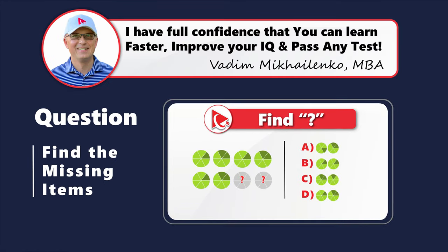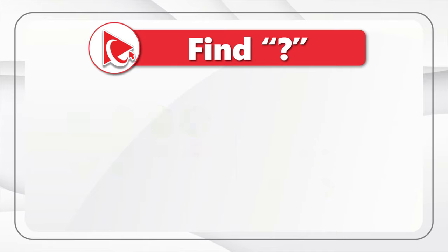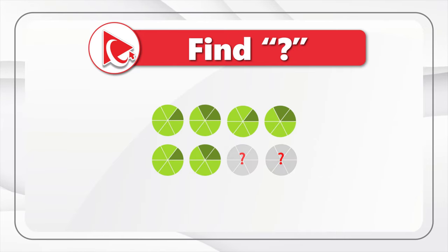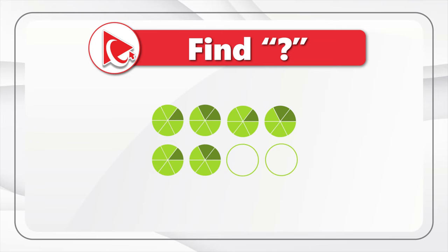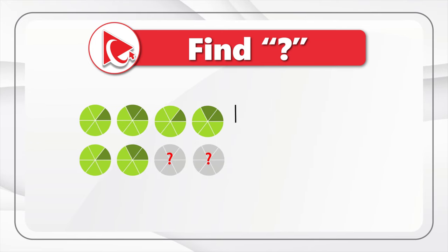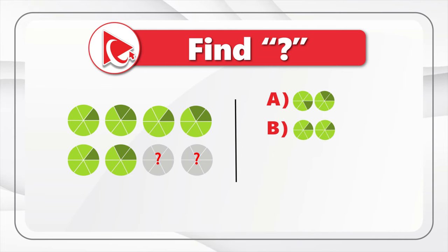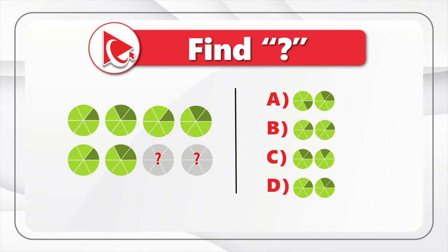This is one of my favorite questions just because it's so unusual, but the answer is very simple. You are presented with a set of eight circles — six are visible and you need to select the two missing ones. You have four different choices to find the missing circles: choices A, B, C, and D. Take a close look to see if you can come up with the solution.